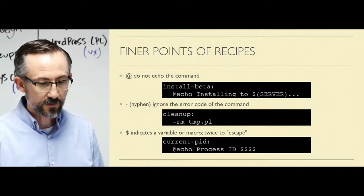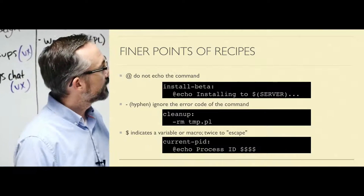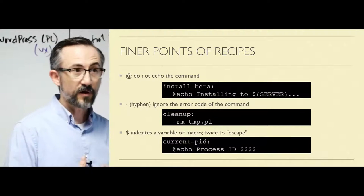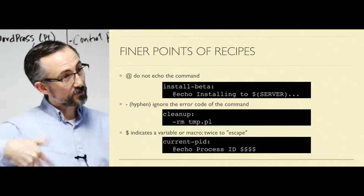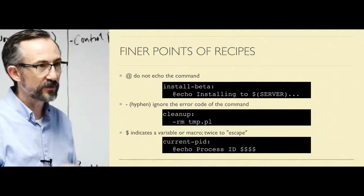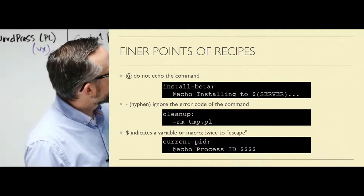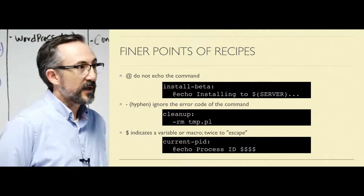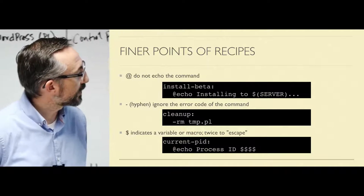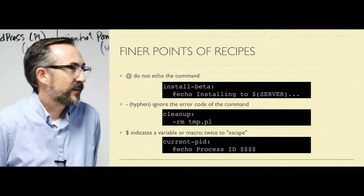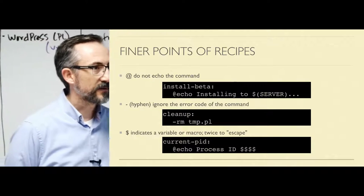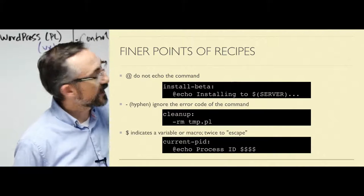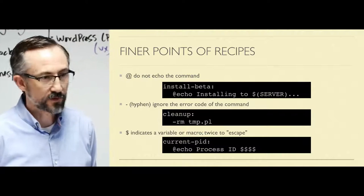Some finer points of recipes. The at symbol tells Make: don't echo the command before you run it. By default, Make will print the command out that it's about to run, then run it, then you'll see the output. The at sign says don't do that — just show us the output of the command. The hyphen before a command tells Make to ignore the error code. Sometimes you might have a situation like this, especially in a clean target, where you want to clean up some files but if the file doesn't exist, you don't want that to be an error — it's idempotent. You can combine those: you can have an at and a minus together in any order, and Make will do the right thing.